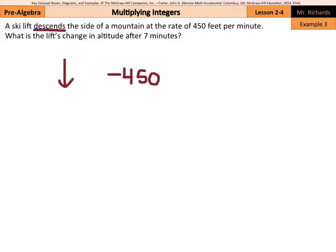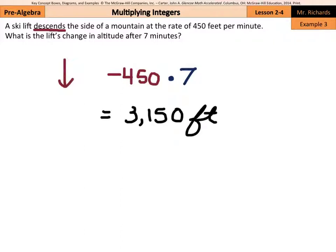Now, we're traveling 7 minutes, so if we take the negative 450 and multiply by 7, we'll get the product of 3,150 feet. But remember, a negative times a positive is a negative answer. So negative 3,150 feet represents the lift's change in altitude after 7 minutes.